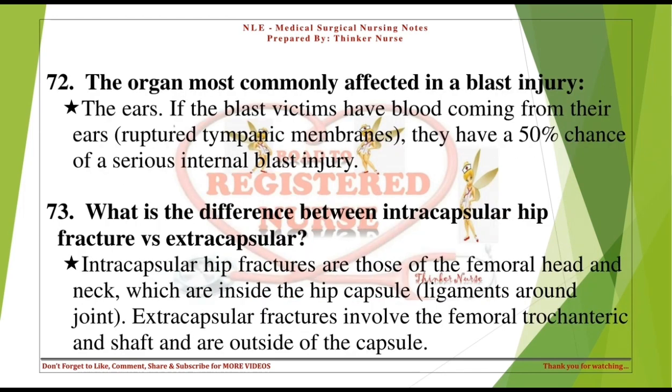The organ most commonly affected in a blast injury is the ears. If blast victims have blood coming from their ears — ruptured tympanic membranes — they have a 50% chance of a serious internal blast injury.